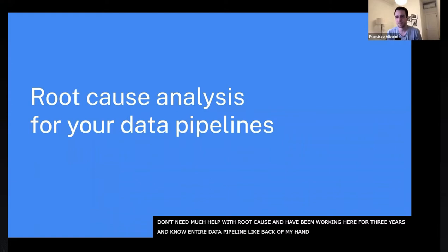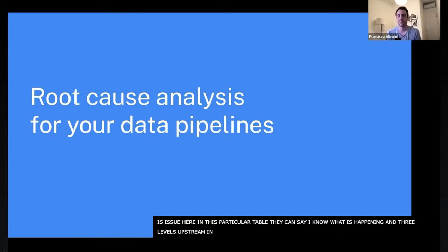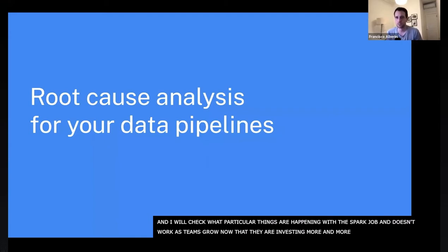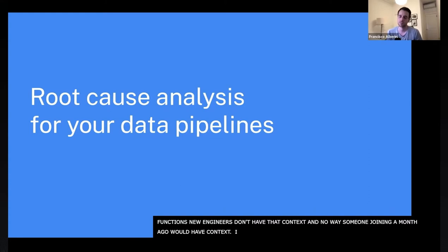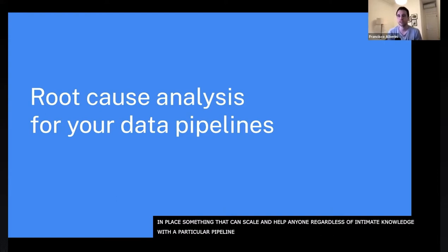And it's not that they're being full of themselves — they actually understand the ins and outs of how the data works. If you tell them there's an issue in a particular table, they'll say: yep, I know exactly what's happening — it's three levels upstream in the lineage, there's an Airflow DAG that runs a Spark job and I think that Spark job might be failing. But this doesn't really work as teams grow. New data engineers don't have that context. Someone who just joined a month ago won't know that. So what we've found to be really effective is having a clear, scalable process in place to help anyone — regardless of their intimate knowledge of a particular pipeline — know what to do when they catch an issue.